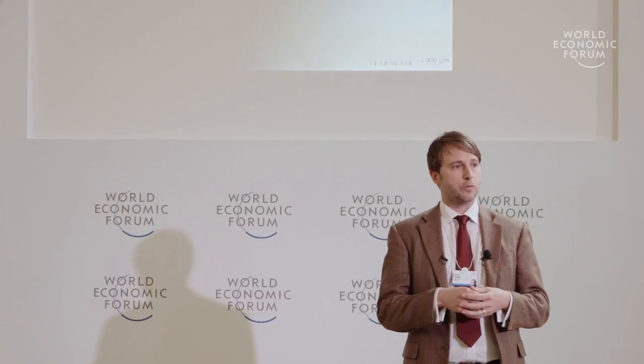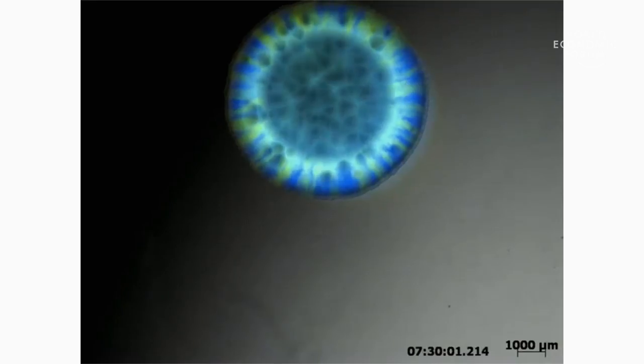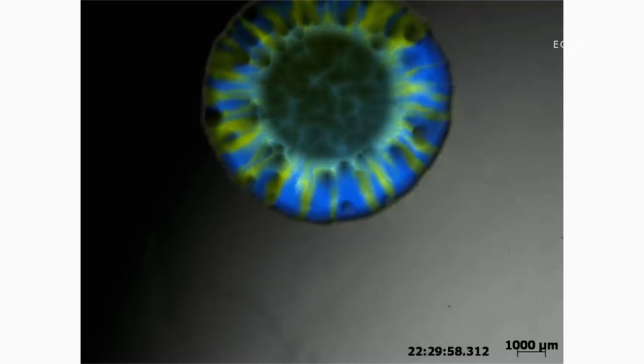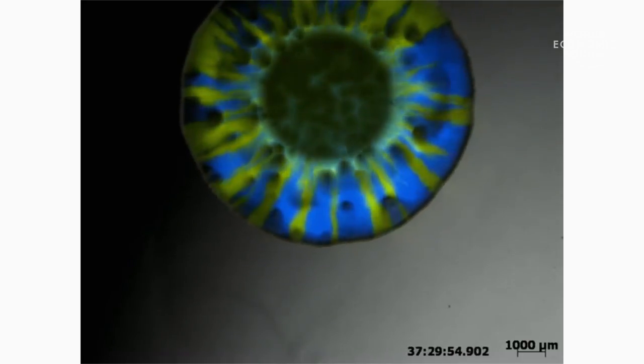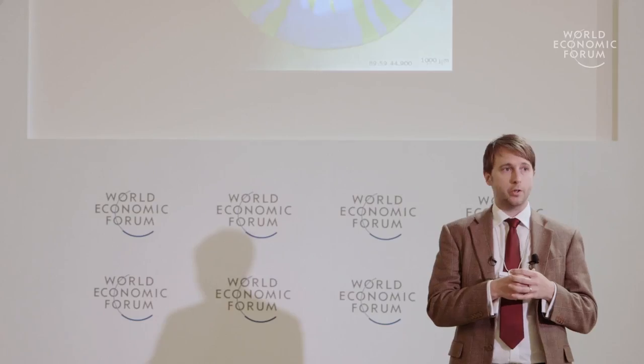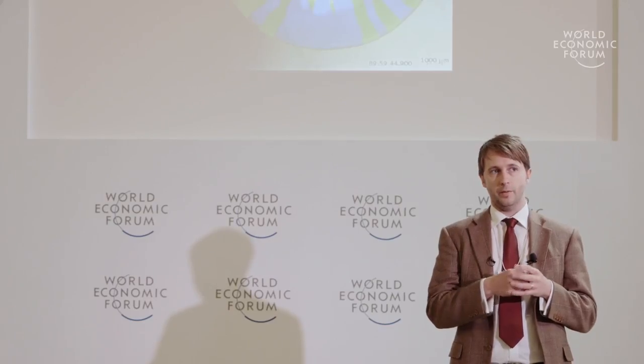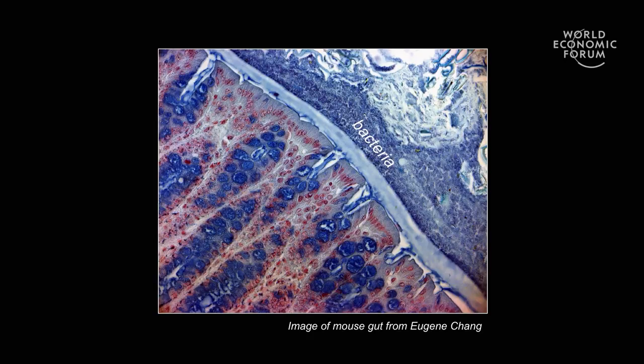The way bacteria really live is in dense and genetically diverse communities containing many strains and species, so much so they're often called microbial jungles. The movie behind is from my lab showing a bacterial colony growing — this is a typical mode of growth. The bacteria are very dense, and you can also see spatial structure where different genotypes are positioned in different parts of the colony. This is how bacteria really live: in soil, on roots, on industrial surfaces, and indeed inside you, living inside your gut and other parts of your body.